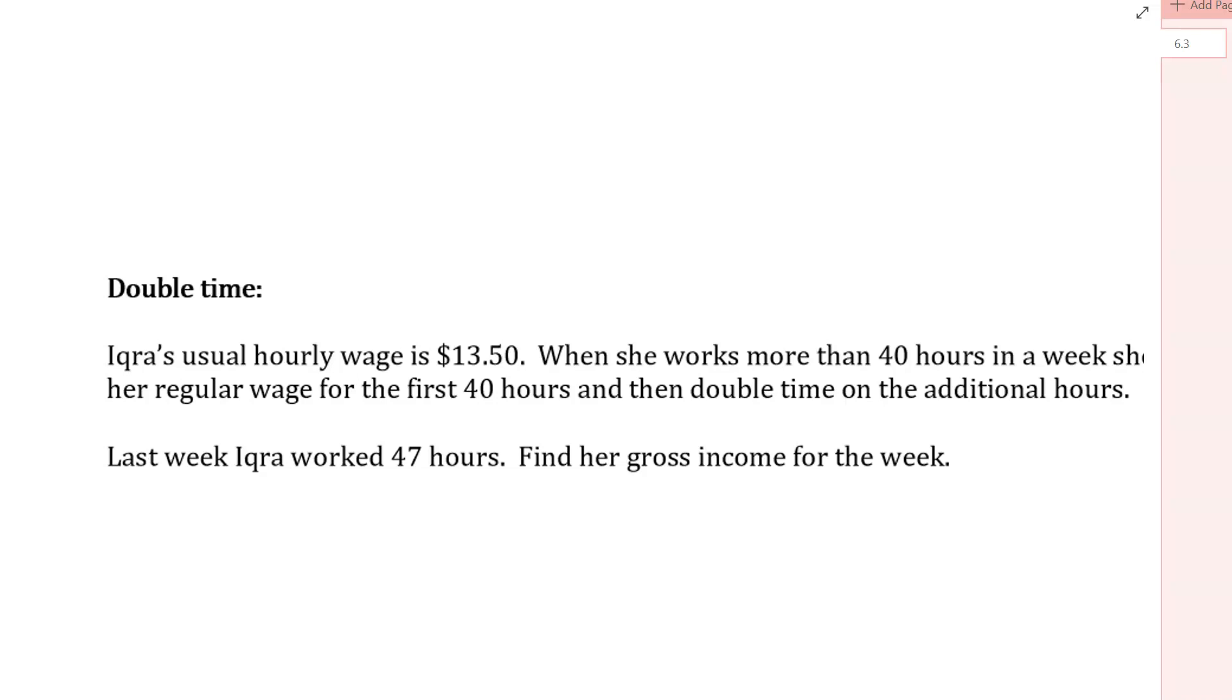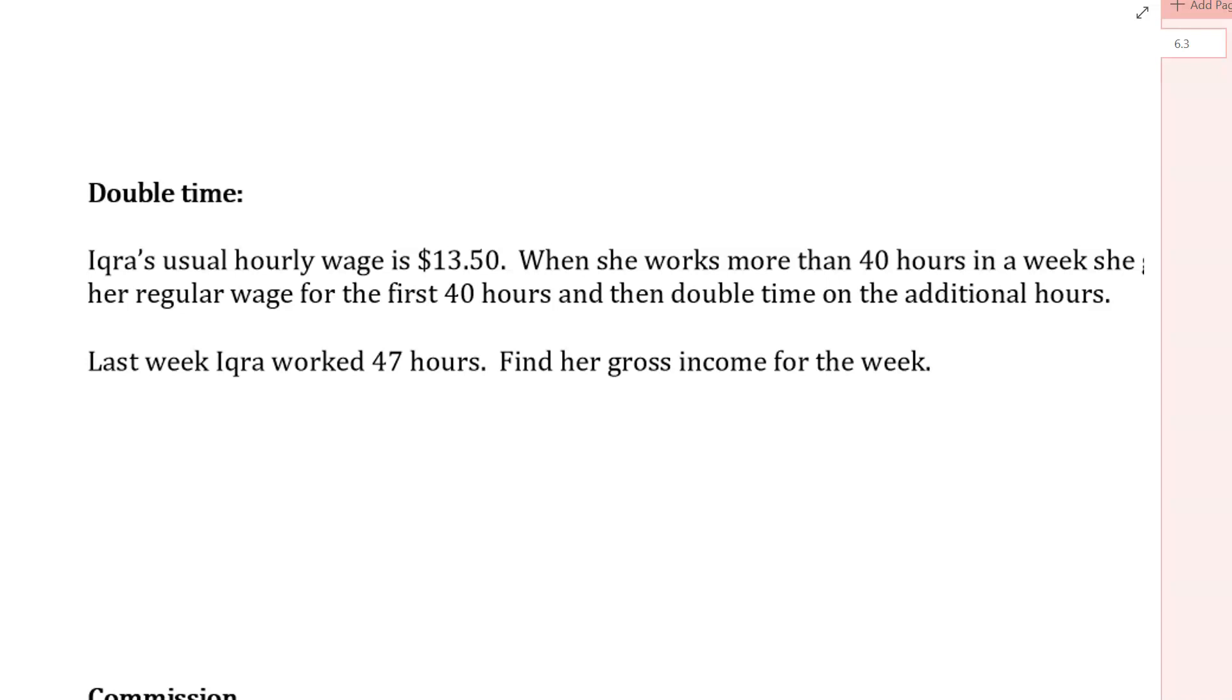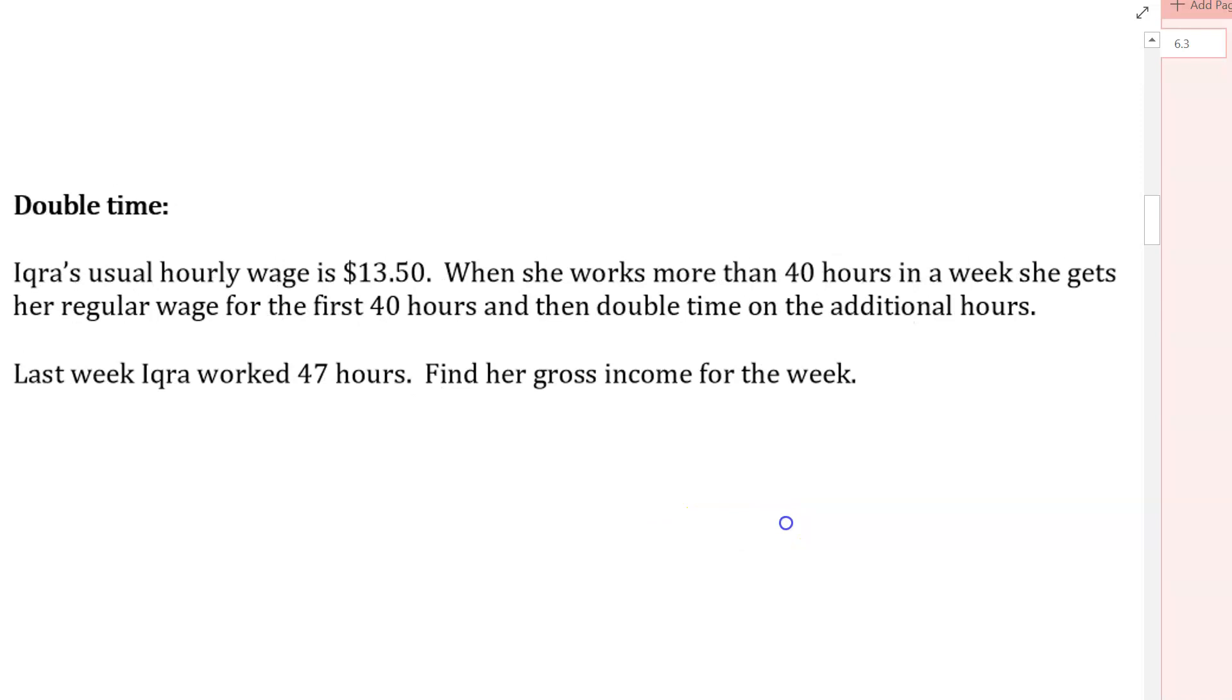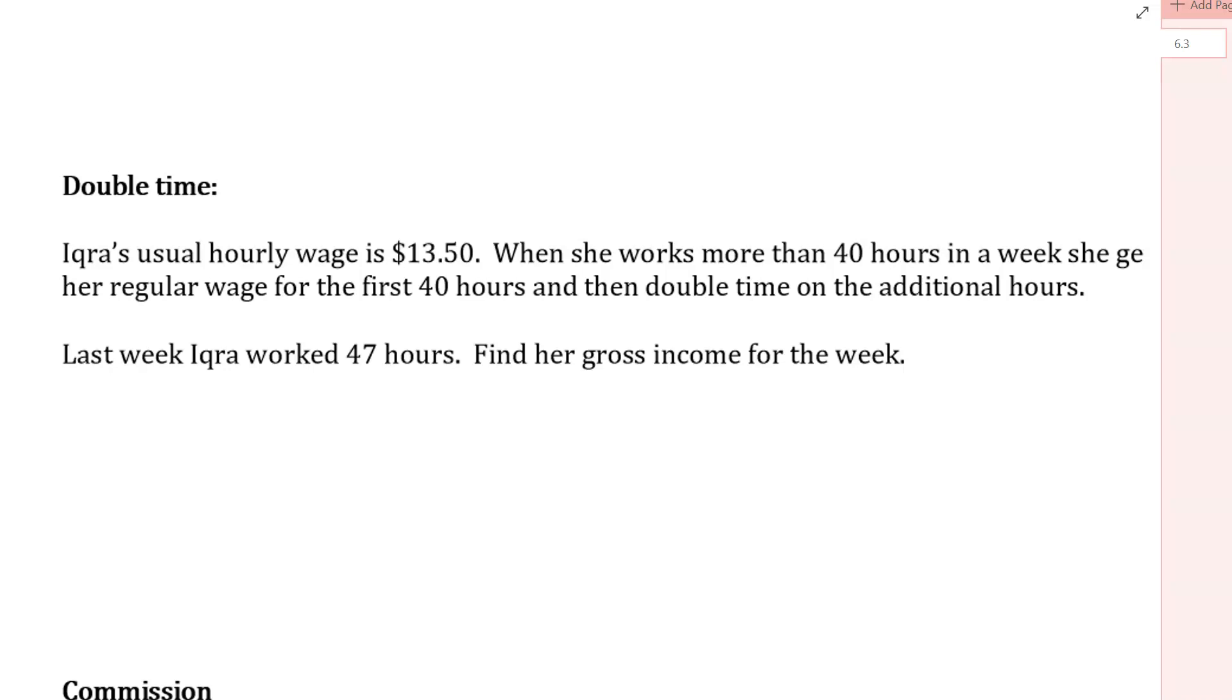Double time means times two. And here's a question that says, Iqra's usual hourly wage is $13.50. When she works more than 40 hours in a week, she gets her regular wage for the first 40 and then double time on the additional hours. Last week, Iqra worked 47 hours. Find her gross income for the week. Okay, so that 47 hours is going to break up into 40 regular hours and seven double time hours.